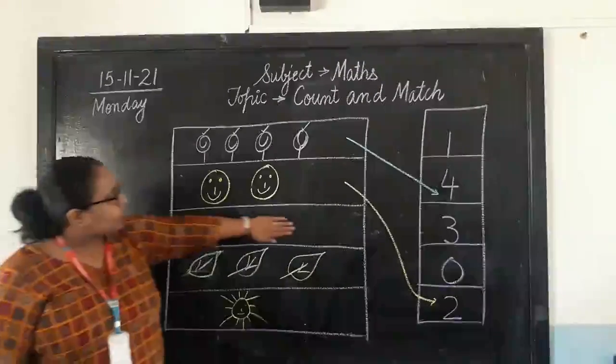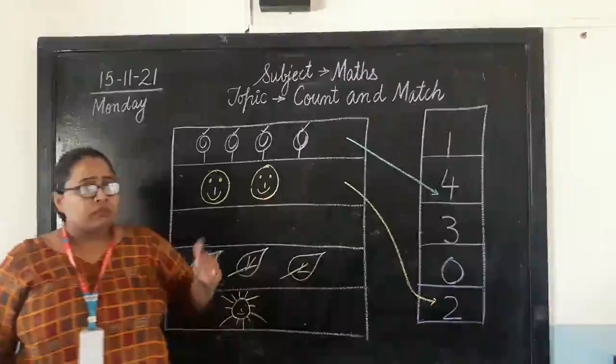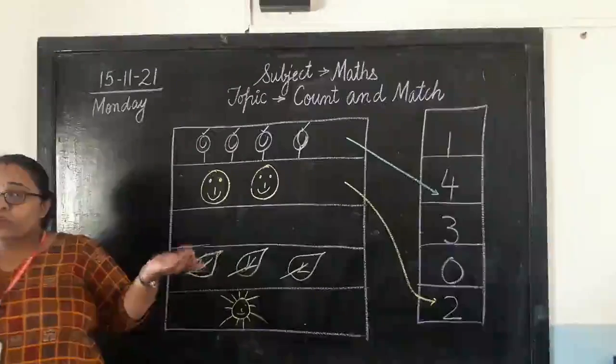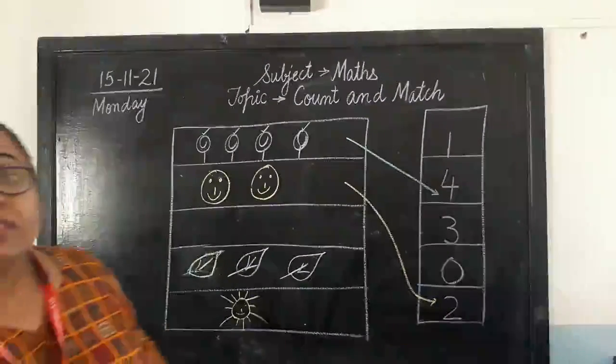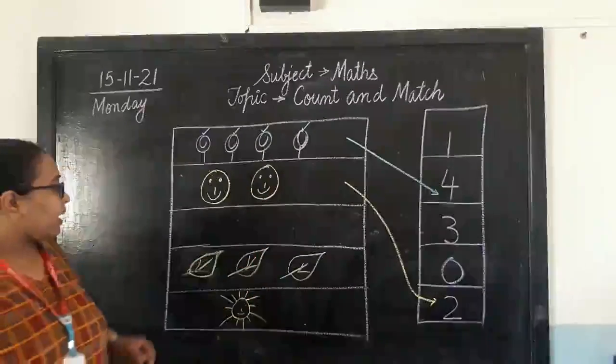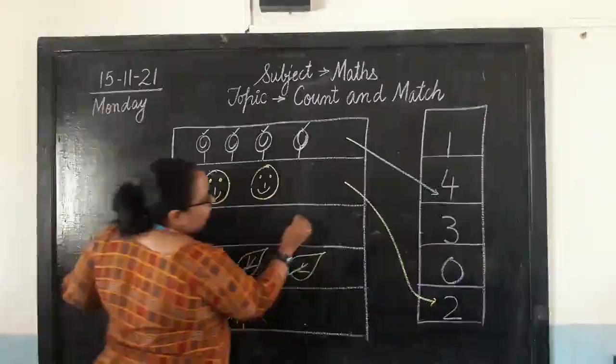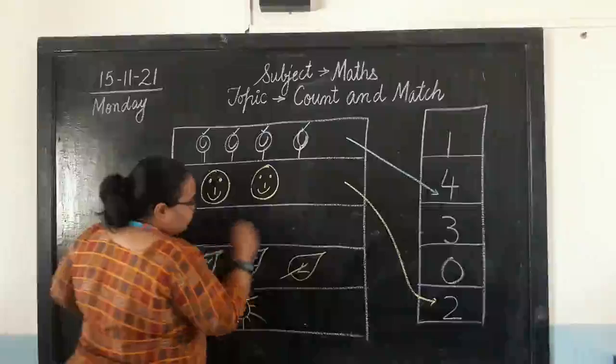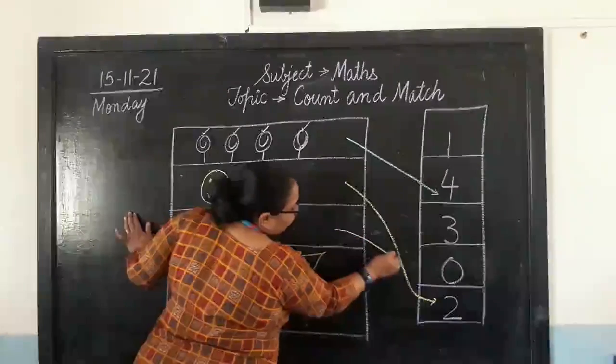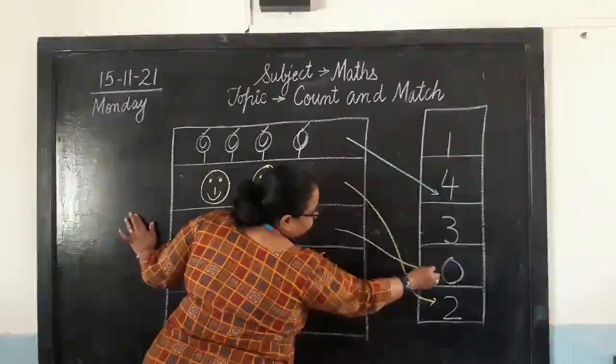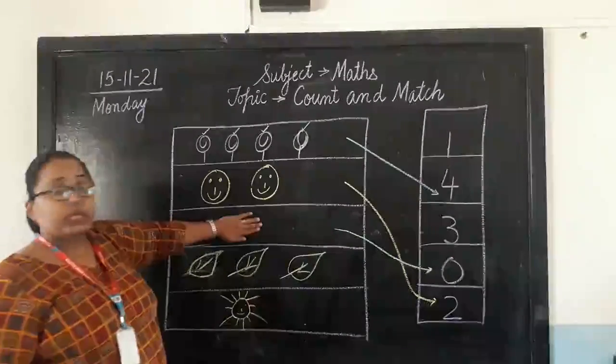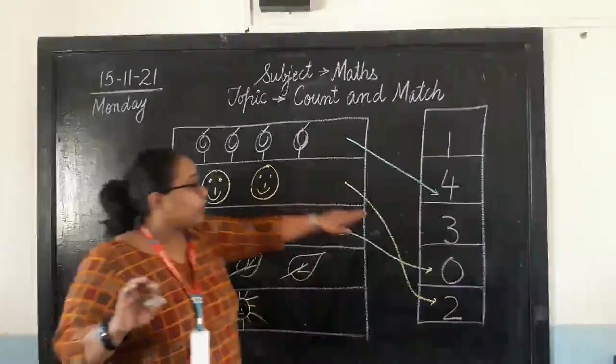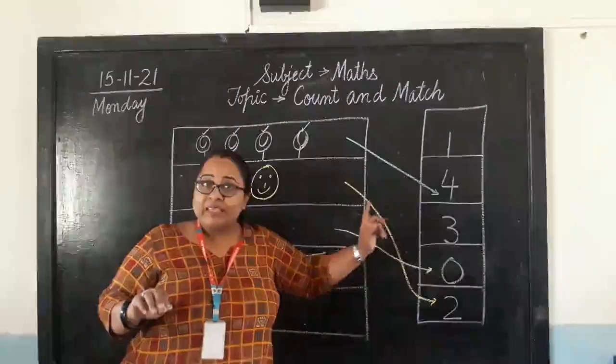Now, what's there in this box? Nothing. When we don't have anything, that means 0. Yes. So, we are going to match this with 0. Like this. Because it's empty, nothing. Nothing means 0. Clear?